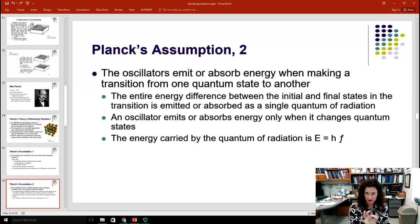So, what this equation says is that the energy of these oscillations is quantized. It comes in discrete units. And each discrete energy value corresponds to a different quantum state. Now, these oscillators, and this was his second assumption, emit or absorb energy when making a transition from one quantum state to another.